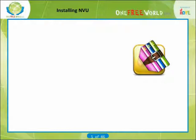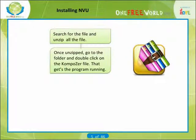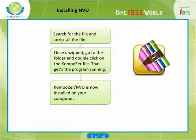Next, you will need to go to your desktop and find the file. You will need to extract all the files since it was a zip file, which means a compressed file. All you have to do is right click on the file and choose Extract All. Once you have extracted the zipped file, go inside the unzipped folder by double clicking on it and double click on the Composer file. That gets the program up and running. You should now have Composer NVU installed on your computer.